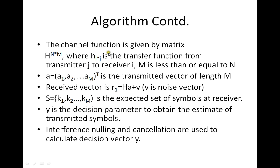Considering channel function matrix H, which is an N×M matrix where each element is the transfer function from transmitter j to receiver i, given M ≤ N, and a transmitted symbol vector A, the received vector is given as R1 = HA + V, where V is the additive noise vector. You will have an expected order of symbols at the receiver, given as vector S, which is a permutation of all possible combinations expected at the receiver.